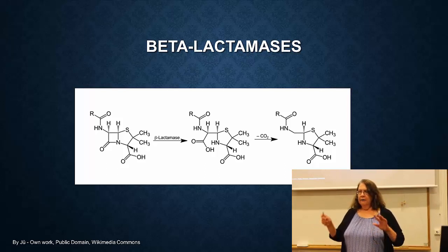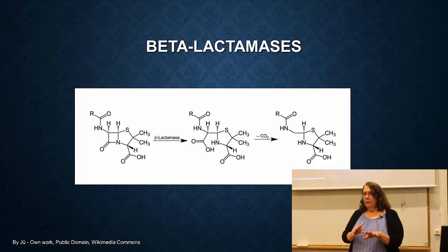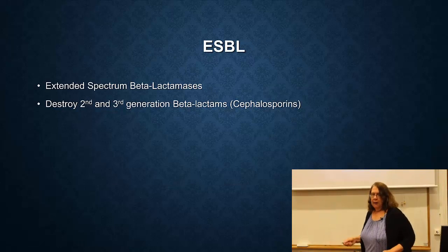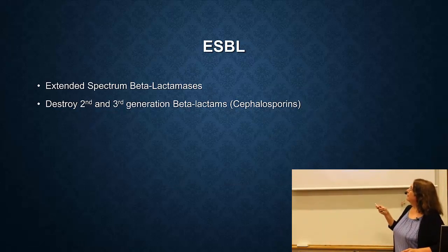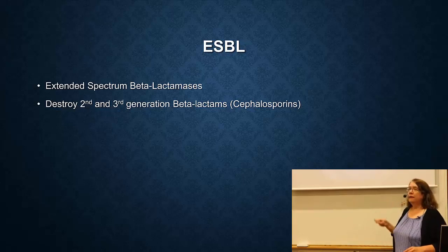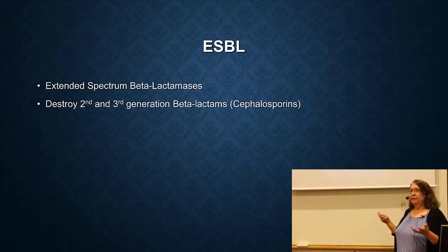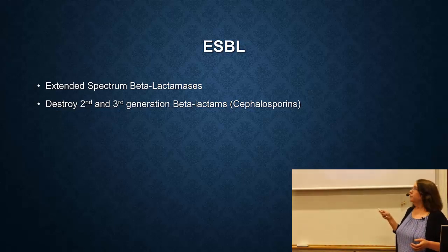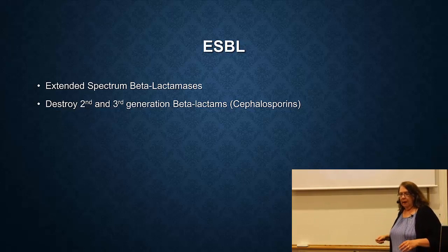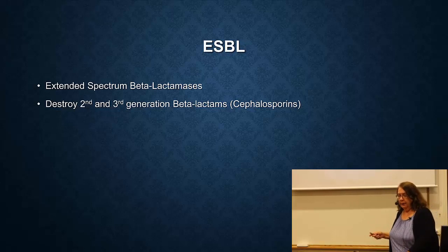There are different types of penicillins or beta-lactams. The first generation was penicillin, and then you had cephalosporins. ESBL strains stand for extended-spectrum beta-lactamases. These are bacteria that produce an enzyme that targets both penicillins and also the second and third generation beta-lactams, the cephalosporins. ESBL is one of the biggest and most rapidly growing problems now.